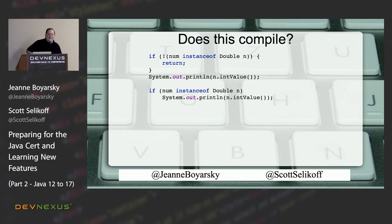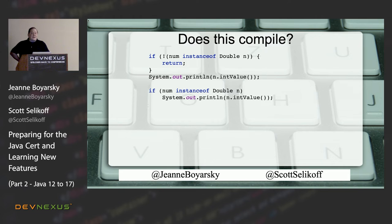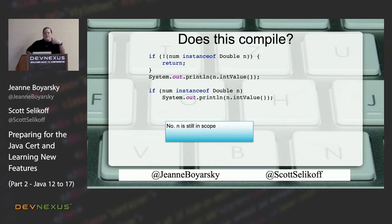Does this code compile? Decent mix of answers. It does NOT compile, but for a different reason — n is a duplicate variable. You can't declare two local variables with the same name. Same rule applies with catch blocks, lambdas, and other scopes — you can't declare a pattern variable with the same name as an existing method parameter or local variable.